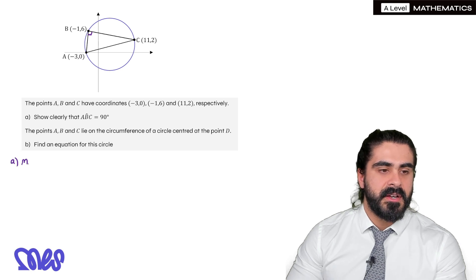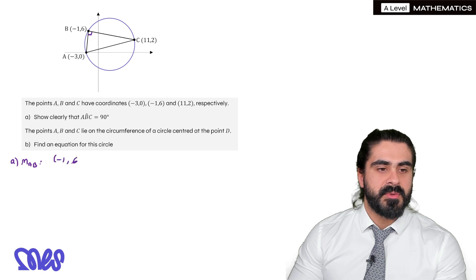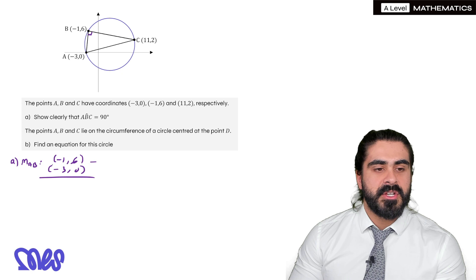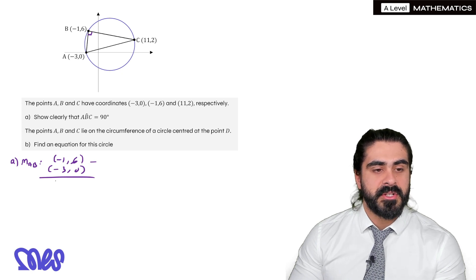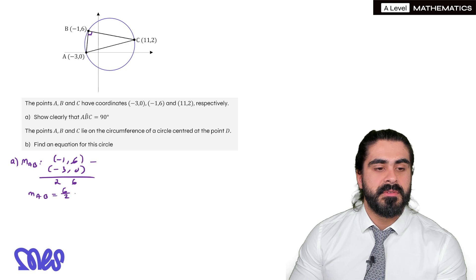We can work out the gradient of AB first. We take away the coordinates minus 1, 6 minus minus 3, 0. Minus 1 minus minus 3 would be minus 1 plus 3 which is 2, 6 minus 0 is 6. So the gradient of AB is 6 over 2 which is 3.